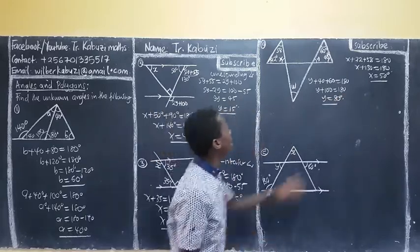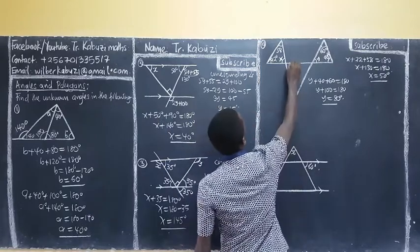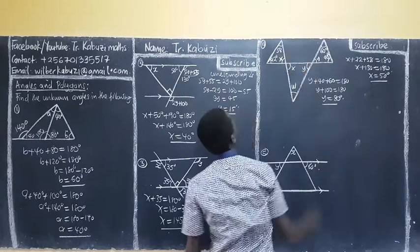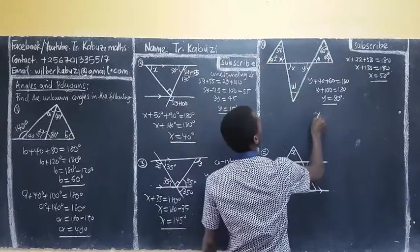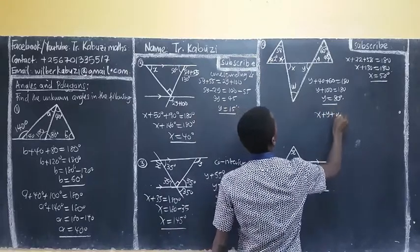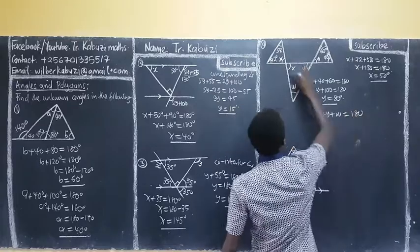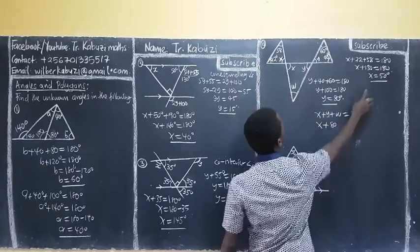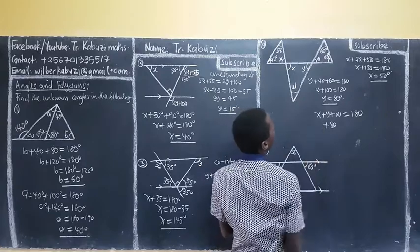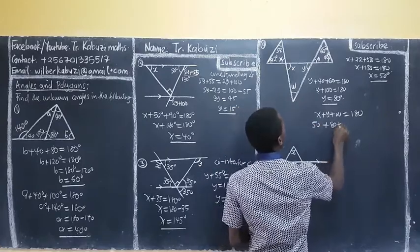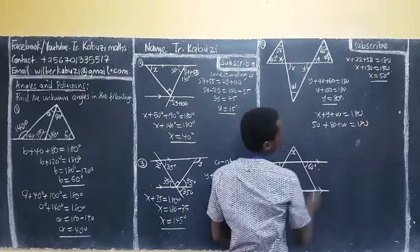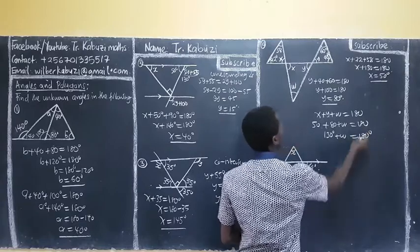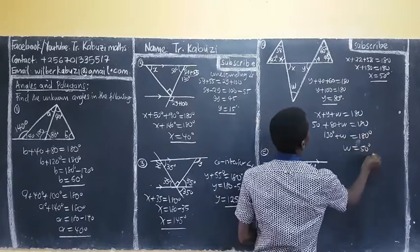After getting Y, I'm going to get W. These are vertically opposite angles, so this is going to be X and this is going to be Y. My X plus Y plus W is going to be 180, because now this is a triangle. So, we have X — which is 50 — plus Y — which is 80 — plus W equals 180. When we add here, we get 130 degrees plus W equals 180 degrees. So, W is going to be 30 degrees.